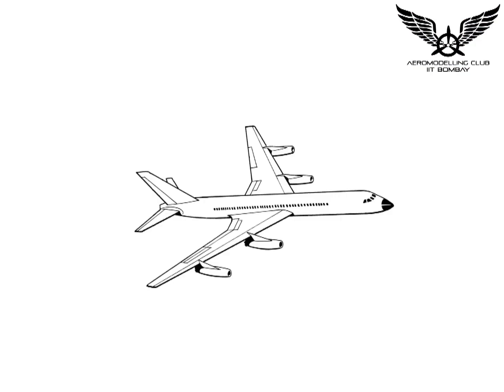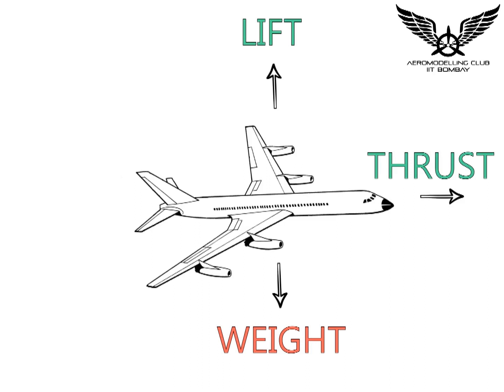The weight acting downwards, lift generated by wings which acts upwards that make it fly, thrust generated by engines in the forward direction, and drag opposite to thrust.